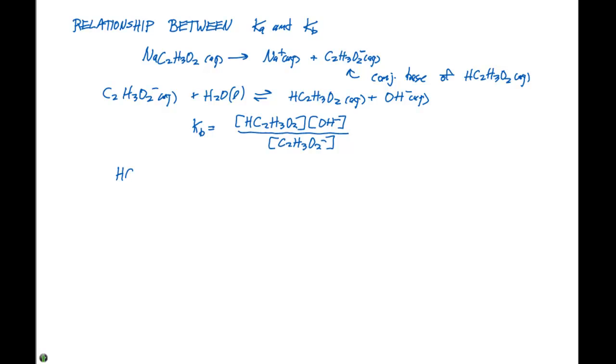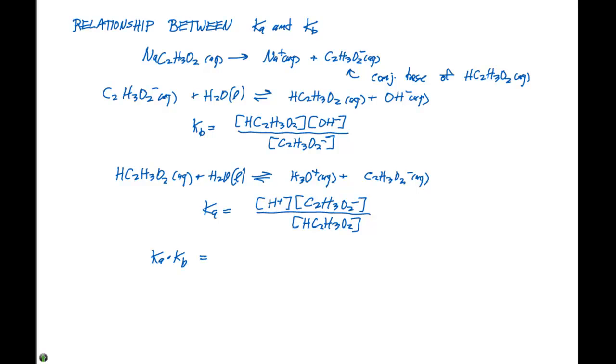Likewise, we can write a Ka expression for acetic acid. Acetic acid is HC2H3O2 plus H2O liquid in equilibrium with H3O plus C2H3O2 minus. The Ka for this particular expression is going to be the concentration of H plus times C2H3O2 minus.